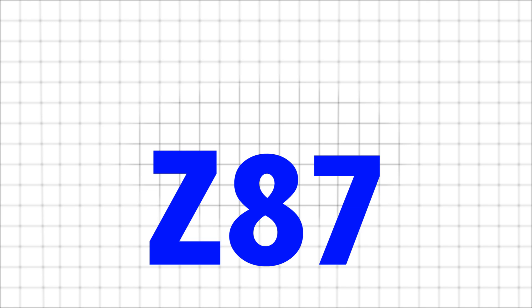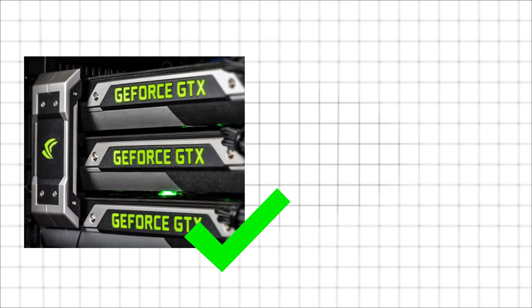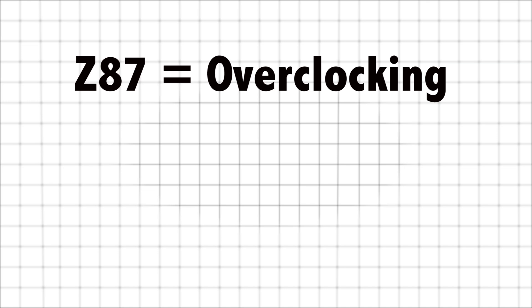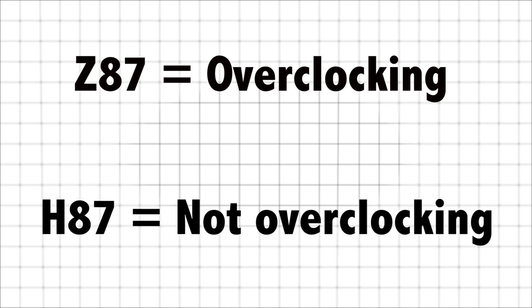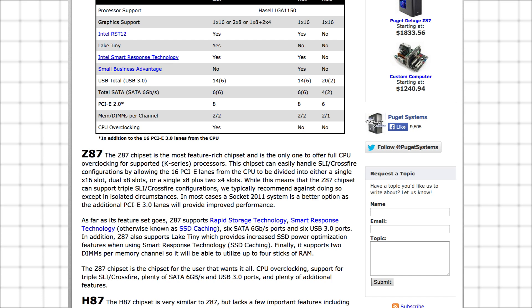Finally, the Z87 chipset is for the enthusiast. You'll be able to do three-way SLI or Crossfire and overclock your CPU. Other than that, it's pretty similar to H87. Most people generally recommend Z87 for overclocking and H87 if you don't want to overclock, as the benefits of three-way SLI or Crossfire are often questionable. If you want more in-depth information about the difference in chipsets, the first link in the description is always there for you.